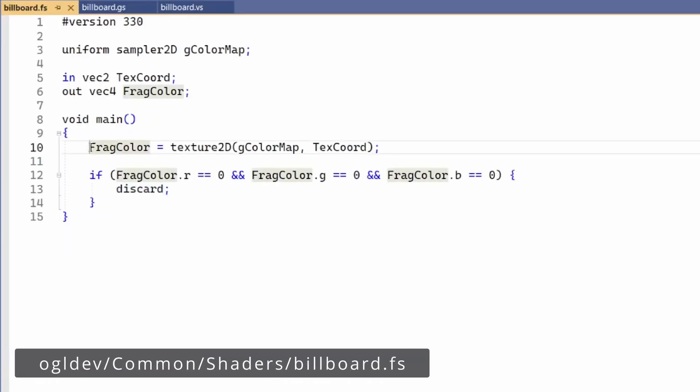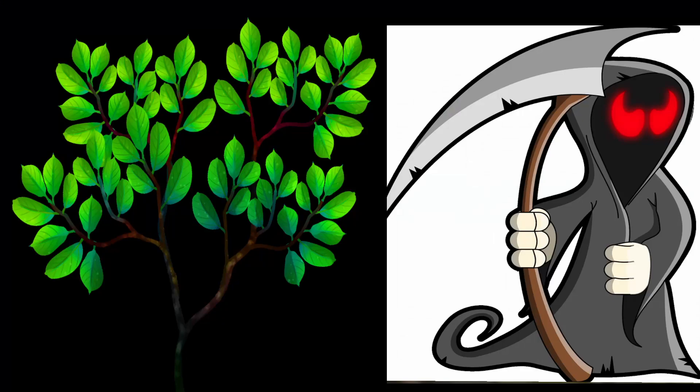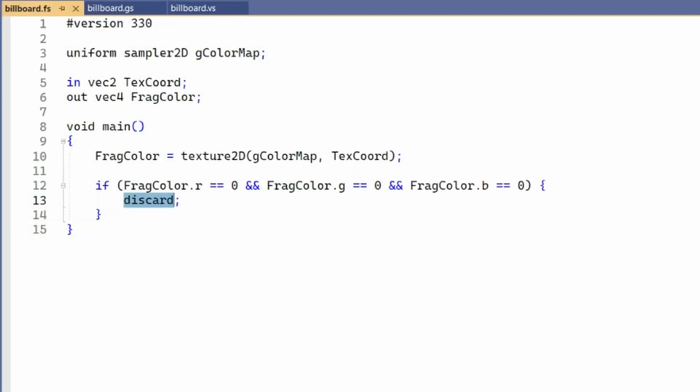In the fragment shader, we just need to sample the color from the texture. Notice that we are also checking whether the color is entirely black or white, depending on the specific texture. I'm actually using two textures in this demo. One has a black background and the other has white. So to get rid of the background, we need to check for the correct color and use the special GLSL keyword discard in order to drop the current fragment entirely.